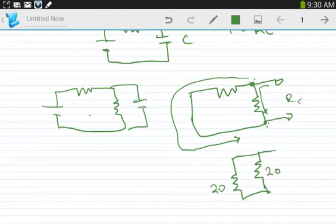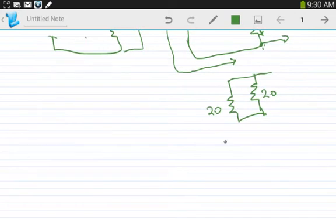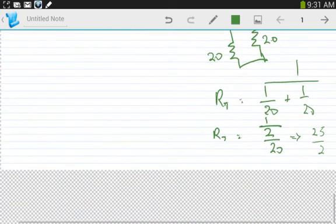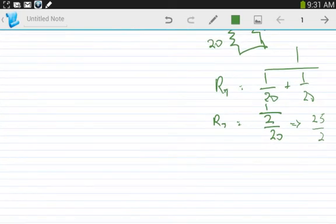Redraw that. R total is 20 and 20. I know that's 10 because they're the same value, but the traditional way: these are in parallel. 1 over 20, 1 over 20. Common denominator: 2 over 20 over 1. 20 divided by 2. R total equals 10 ohms.